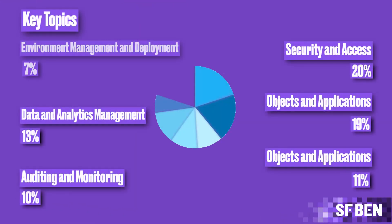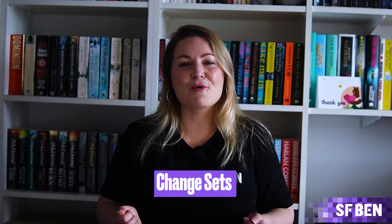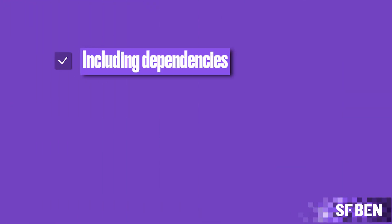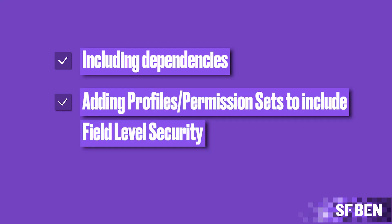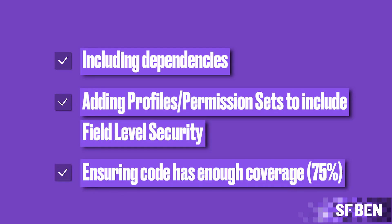Moving on, we have Environment Management and Deployment, accounting for 7% of the exam. Change sets form a big part of this section — you need to know how they work and how they can be used to move your metadata. It's important to know that change sets can't be used between unrelated orgs or developer orgs. All environments, including sandboxes and production, need to be linked to the same production environment. Don't forget to look into best practices when deploying changes, such as including dependencies, adding profiles and permission sets to include field level security, and ensuring your code has enough coverage.